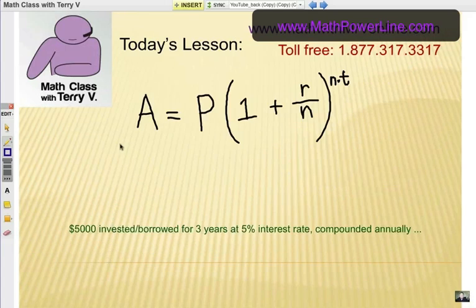Alright, here's the formula for compound interest. It looks pretty complicated but I'm going to break it down for you. A is the total amount that you will have in your account at the end of the time period and after all the compounding. That's your total amount that you will have.